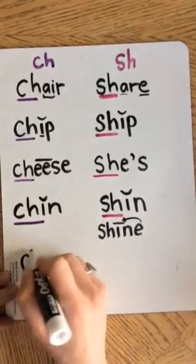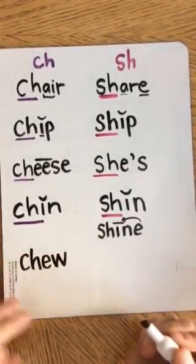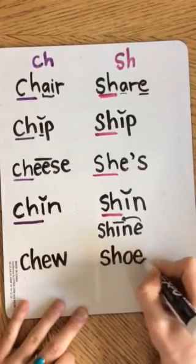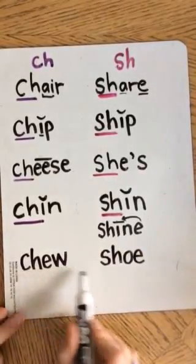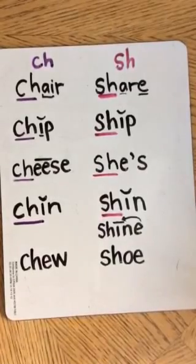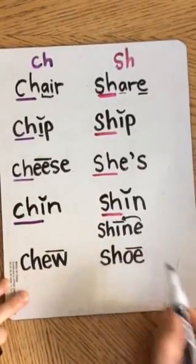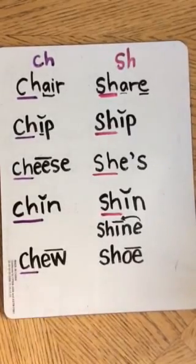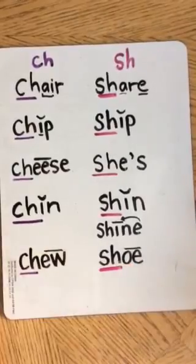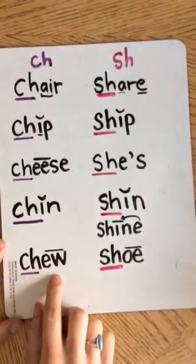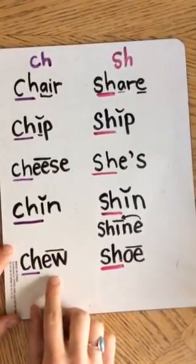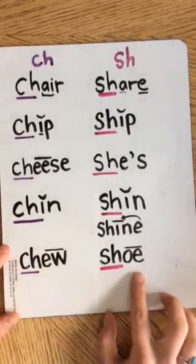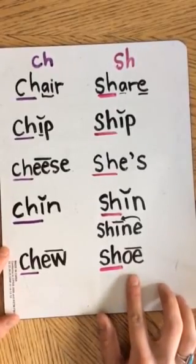Now let's look at the word CHEW and SHOE. Both of these have very interesting spellings for that long U sound, but that doesn't matter right now. CHEW is when Miss Williams or I tell you, please make sure to chew your food, or do not talk while you're chewing with your mouth open. And SHOE is what we wear on our feet.